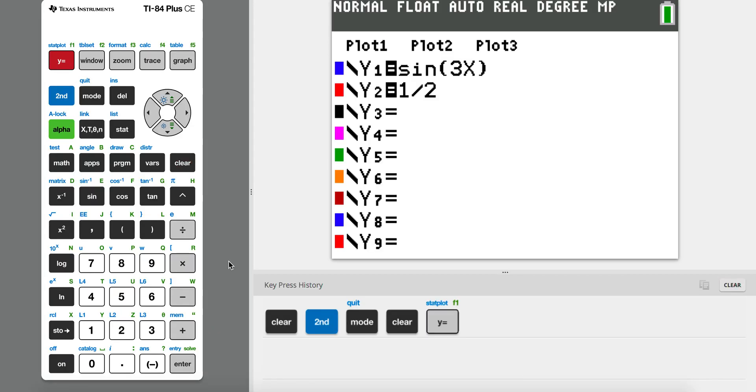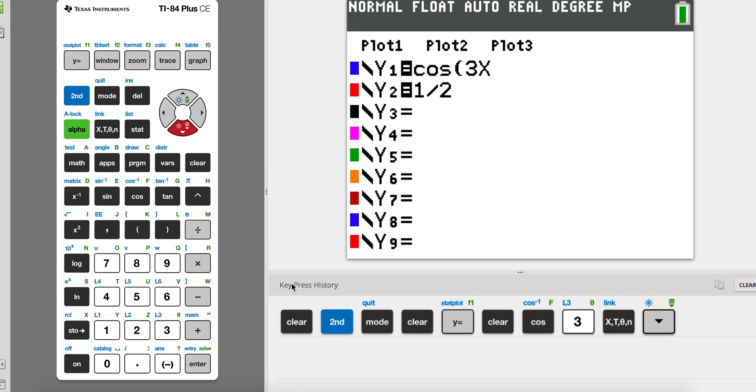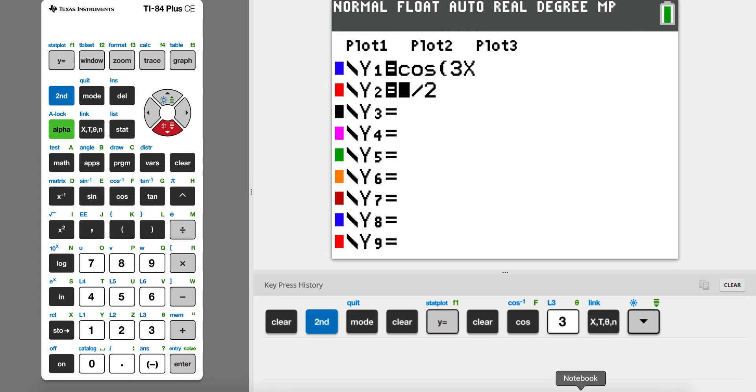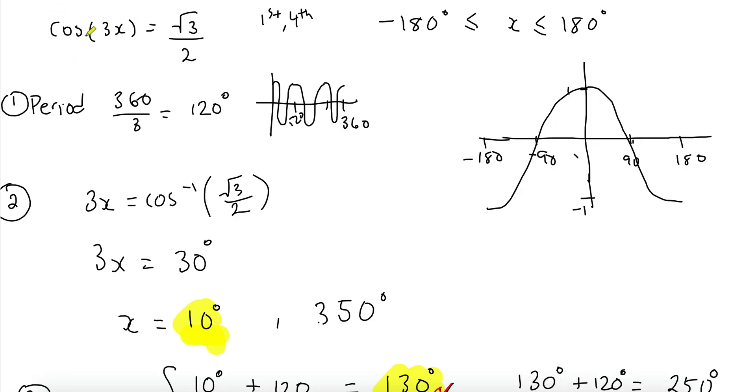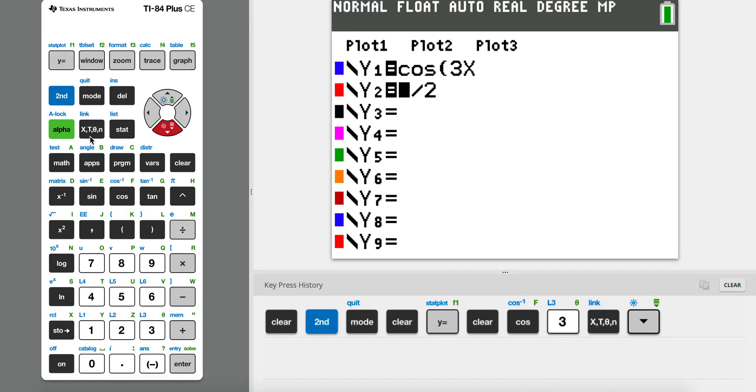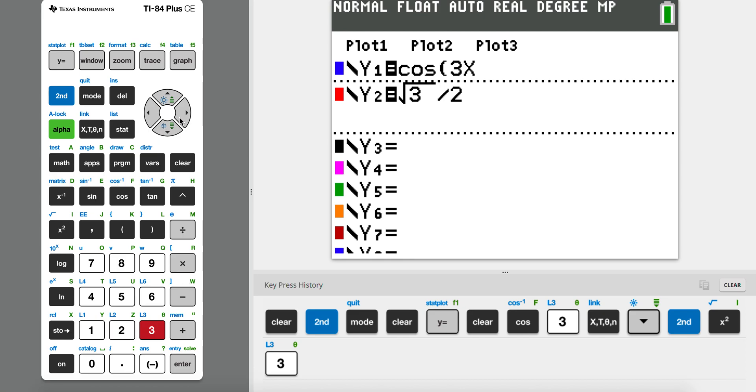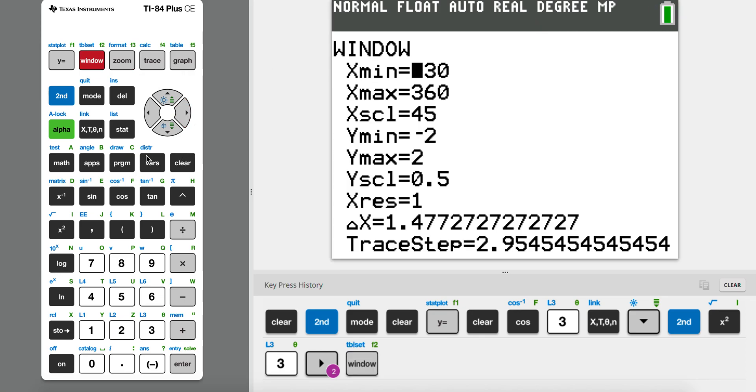So I have cos(3x). And I want to know basically what you're going to do is always write one side in a Y and then the other side in the other Y. So √3 over 2, and I'm in degrees already.